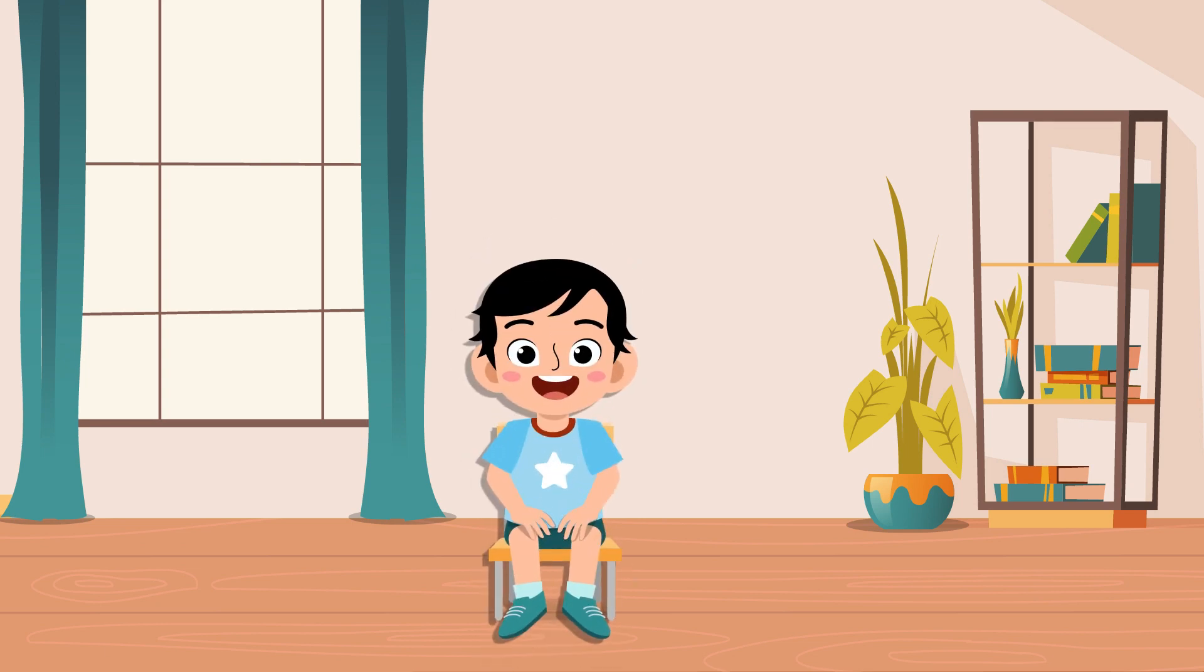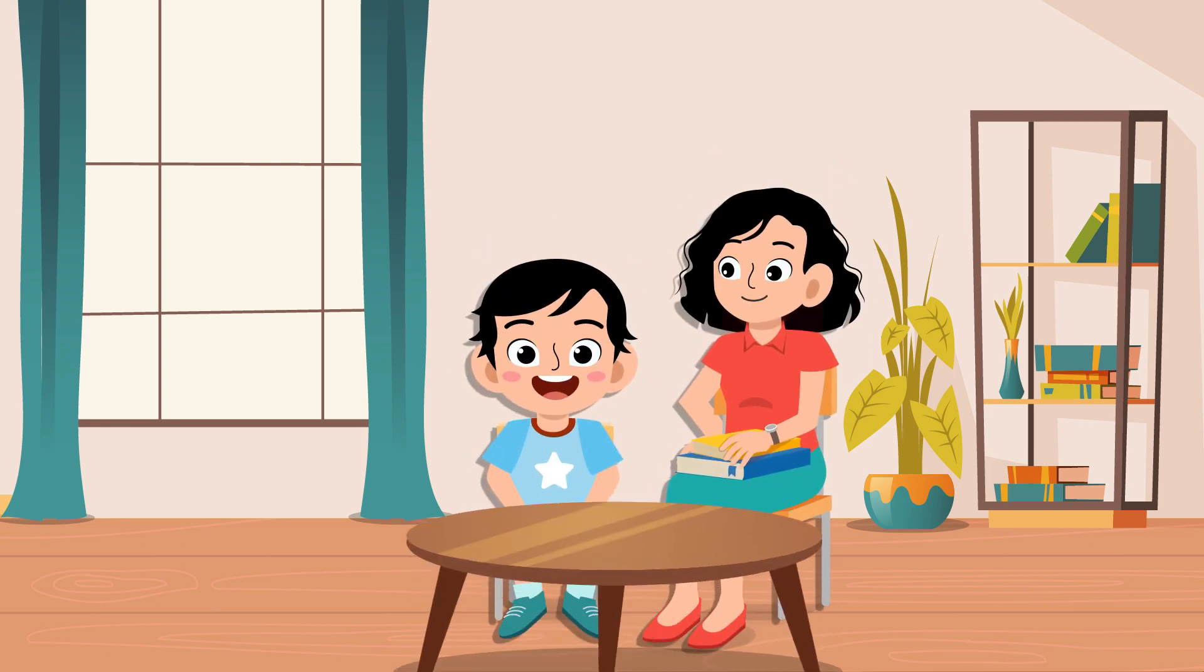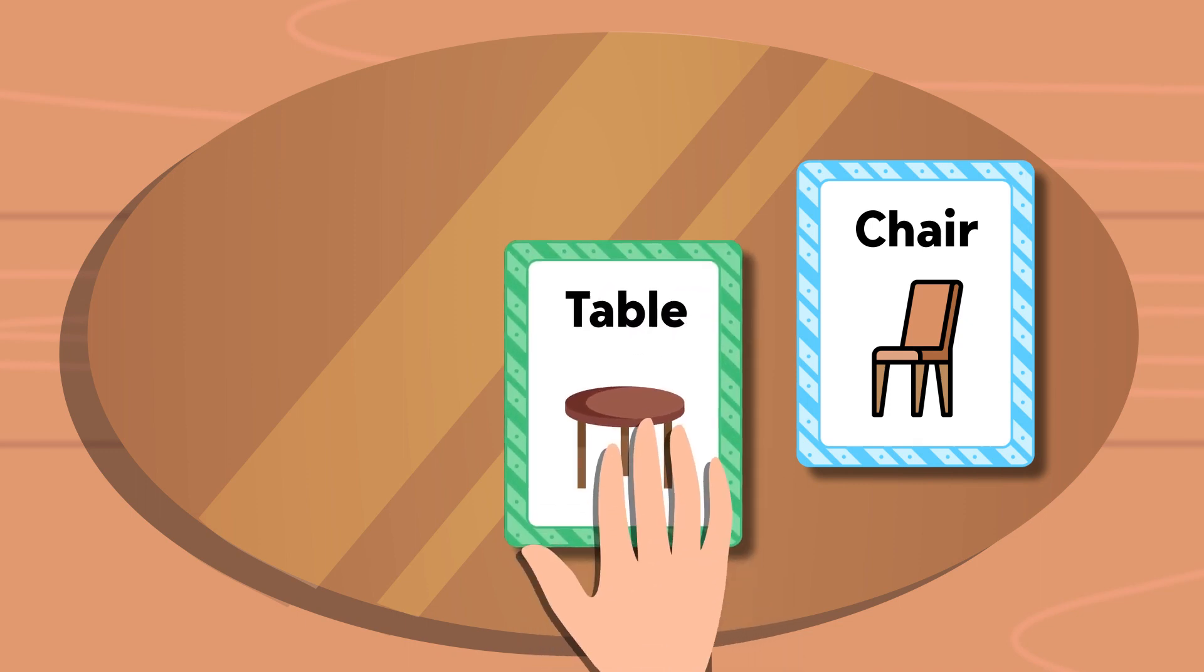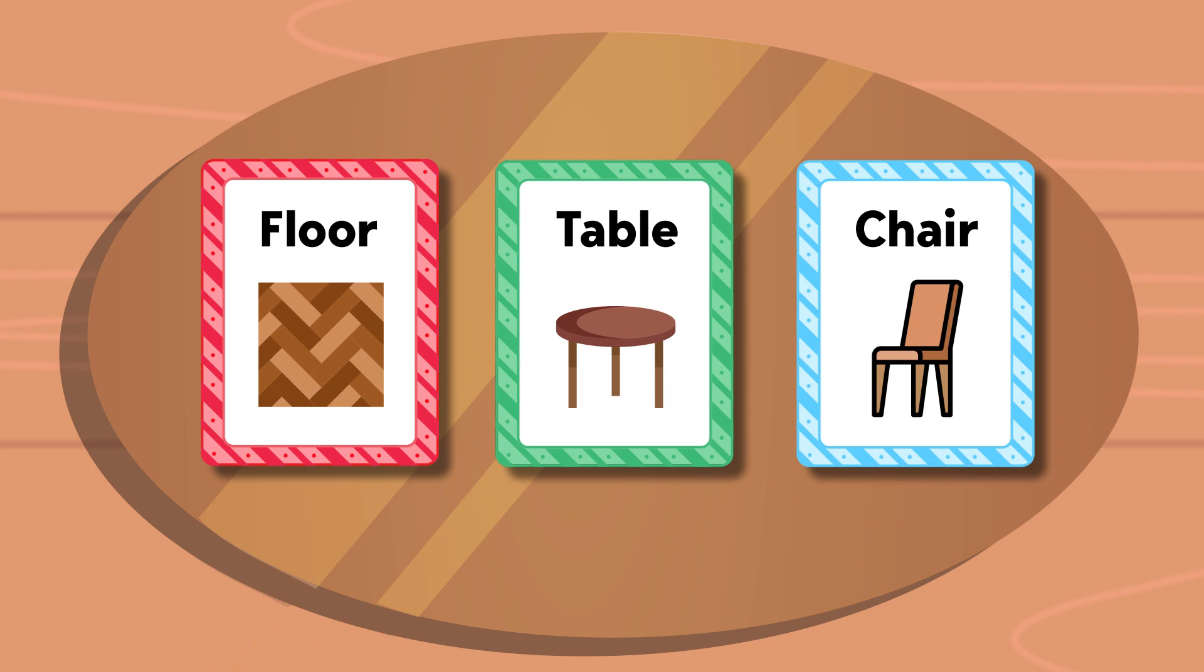Step 1. Make sure the child is seated in a comfortable place and place three flashcards of different environmental objects—table, chair, floor—equidistant from each other.